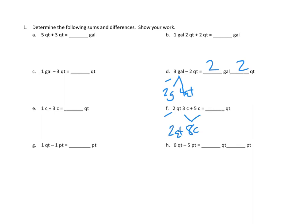I'm thinking maybe we're not done, because the answer is just in quarts. So, let's look at this. Eight cups, and we know that there's two cups in a pint, so we know that eight cups are the same as four pints.